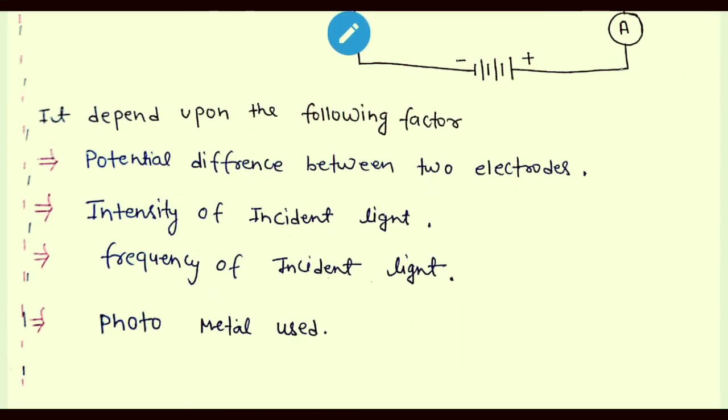To understand the variation of photoelectric effect with respect to potential difference, we will have to keep other quantities such as intensity and frequency of light and type of metal constant. As the potential difference between electrodes increases, the force of attraction on emitted electrons and rate of flow of electrons increases, resulting in increase of photocurrent.